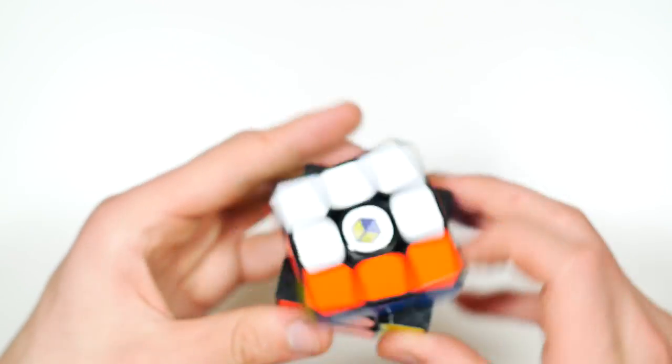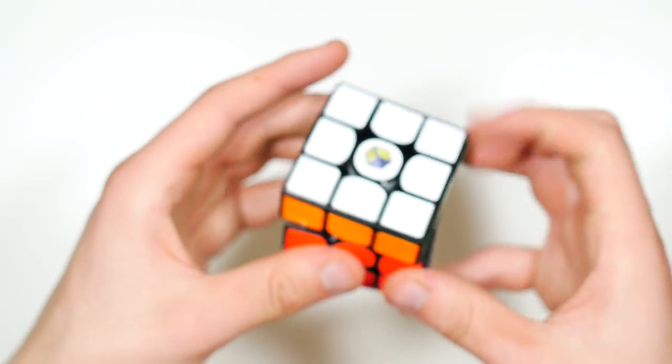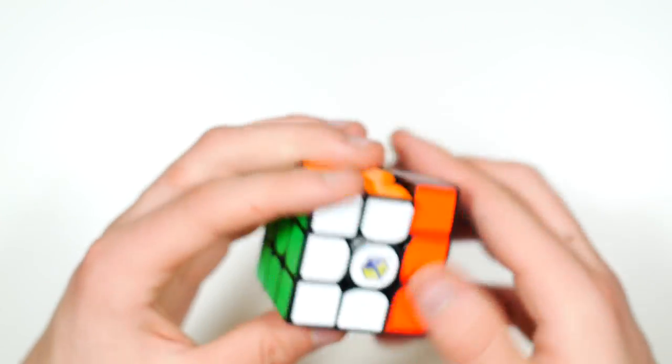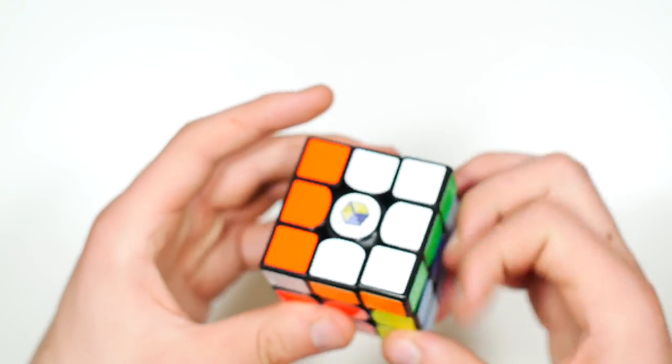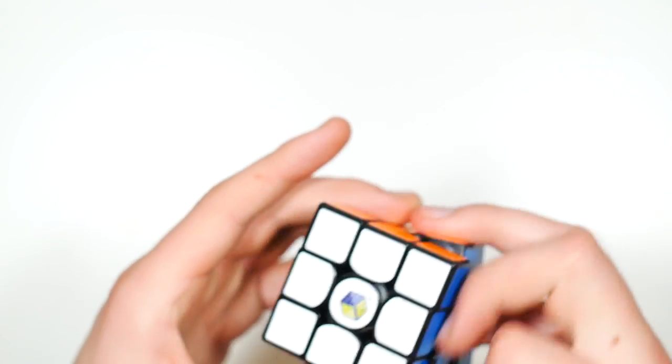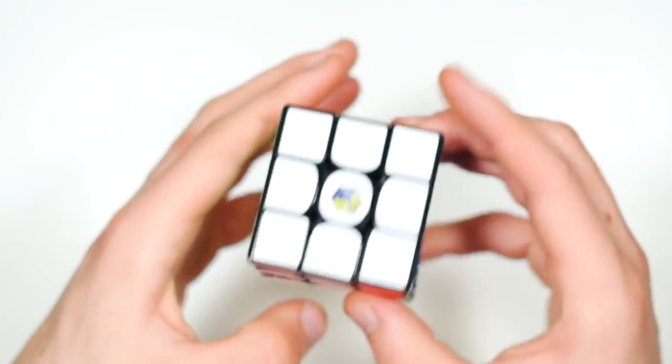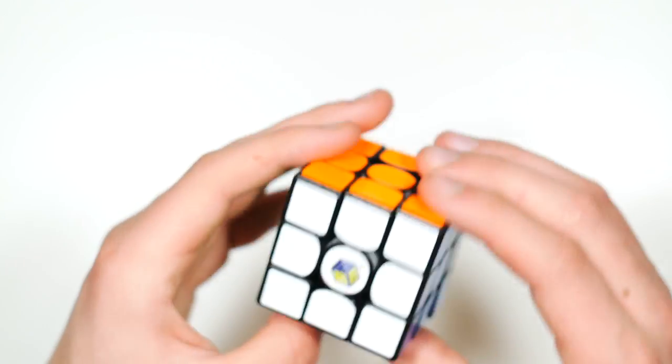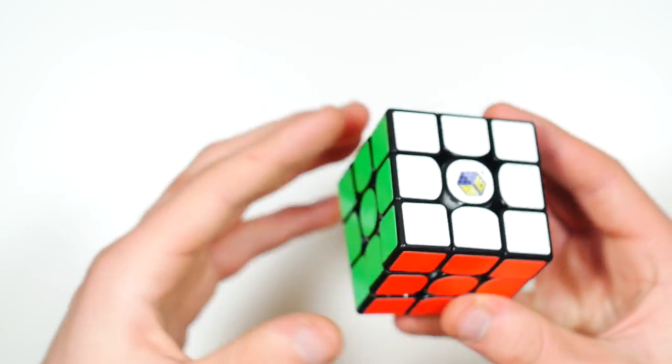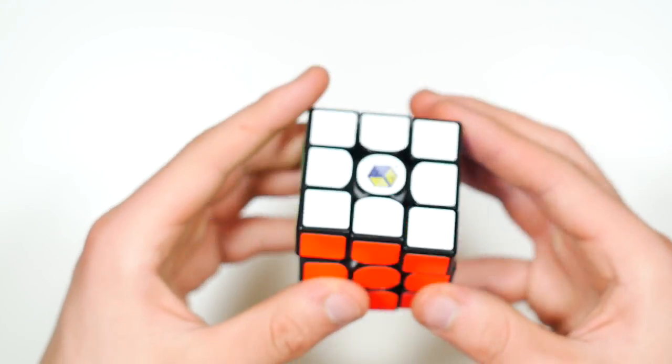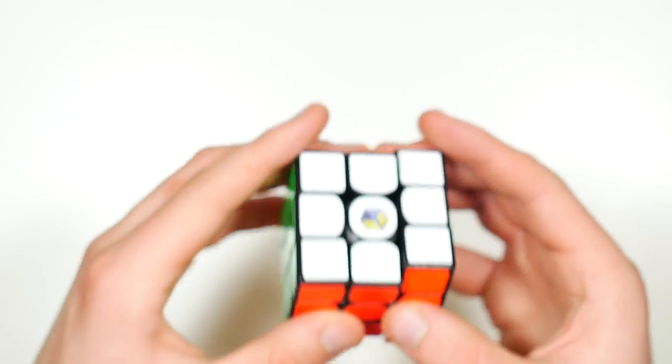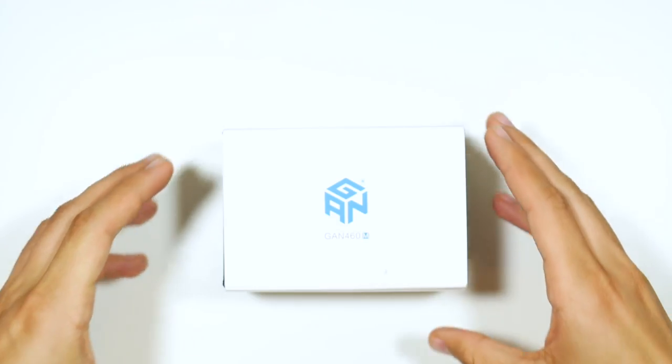Compared to the Little Magic, it's just smoother and higher quality. Yeah, I think once I set this up I'll be able to tell more, but right now I don't know how good it is. I think it's pretty decent, but I like the MGC way more right now. Moving on to the next cube, here we have the GAN 460M.